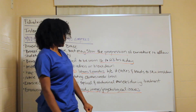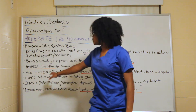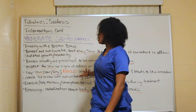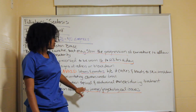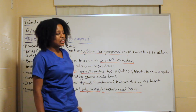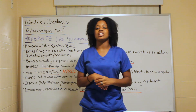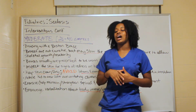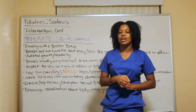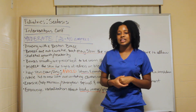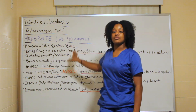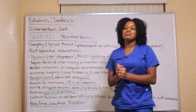To summarize brace care: it slows progression of the curvature; worn 16 to 23 hours per day; inspect the skin regularly; keep skin clean and dry; avoid lotion and powders; and address body image and psychological issues. These are the key points you need to know about brace care for moderate scoliosis — 20 to 40 degrees.